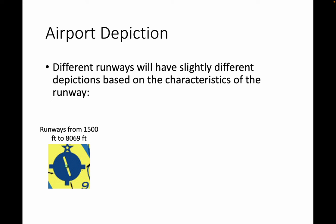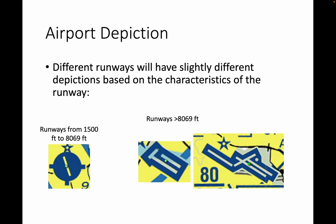Different runways will have slightly different depictions based on their characteristics. The threshold is from 1,500 feet to 8,069 feet long — a runway in this range is shown inside a blue circle if it's towered, or a magenta circle if it's untowered. Runways longer than 8,069 feet can't be shown to scale inside that circle, so they're shown just by themselves. The star symbol on an airport represents a beacon — these airports are equipped with a light beacon. So a star on an airport means a beacon.